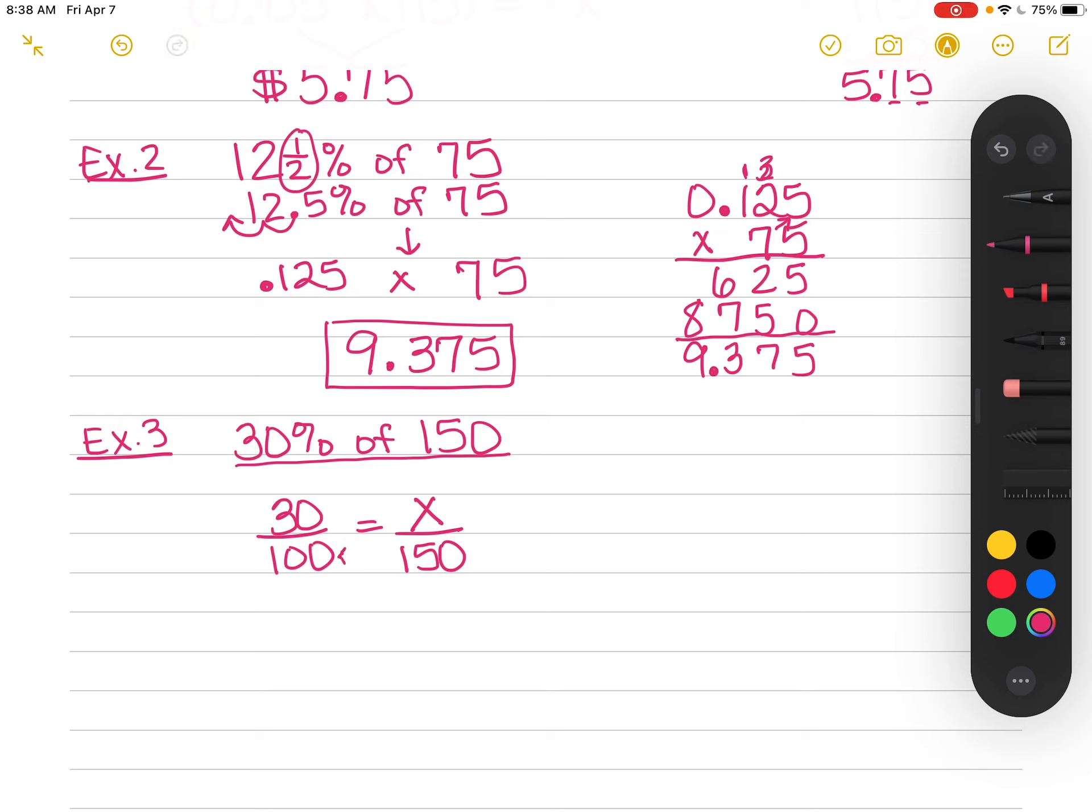When I set up proportions, I always want to line up things. Since 30 out of 100, the 100 is your whole. That's like I have 100 people, or I have 100 of something. And so the 150 is my whole. And then the 30 is the part, and the x is the part. So that's the lesser number. This is the way I would set it up. Now I can do my cross multiplication.